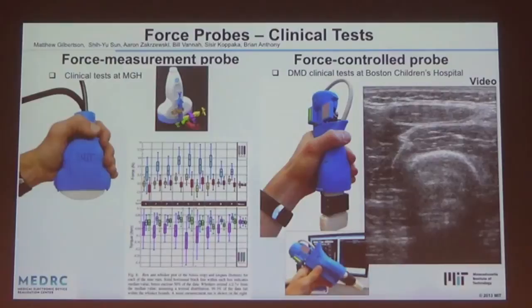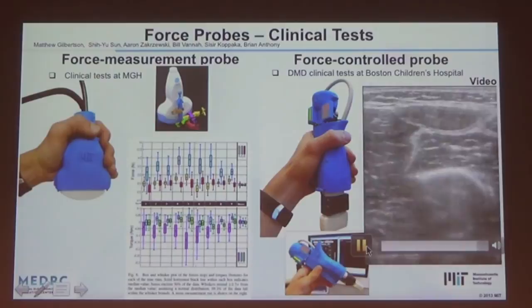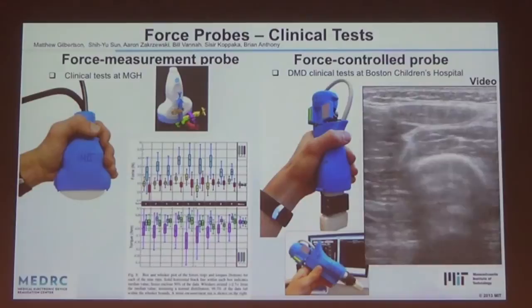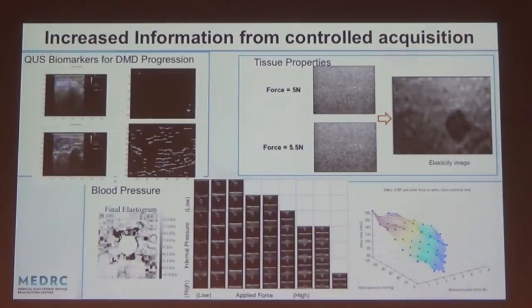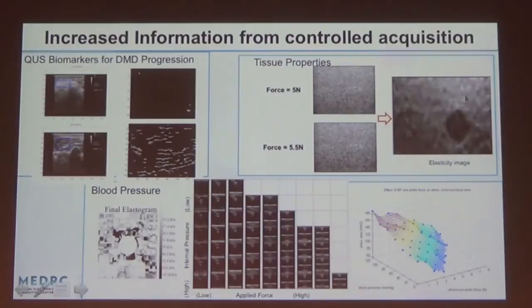One area we're exploring is biostography — you need tissue properties, and you can do quantitative compression-based elastography in a low-cost way. Here is some early work on quantifying blood pressure by looking at diameter, area, and shape changes of a blood vessel as a function of internal pressure and external applied force — an interesting way of enabling blood pressure measurement.